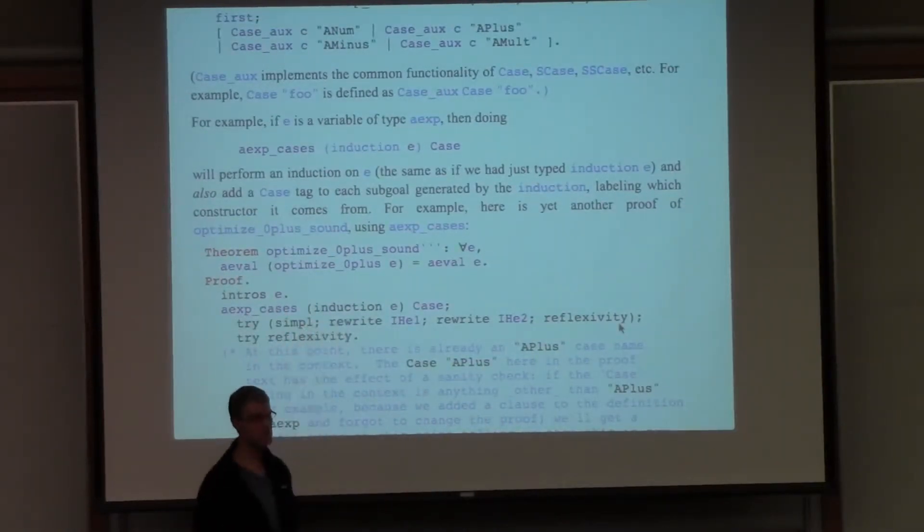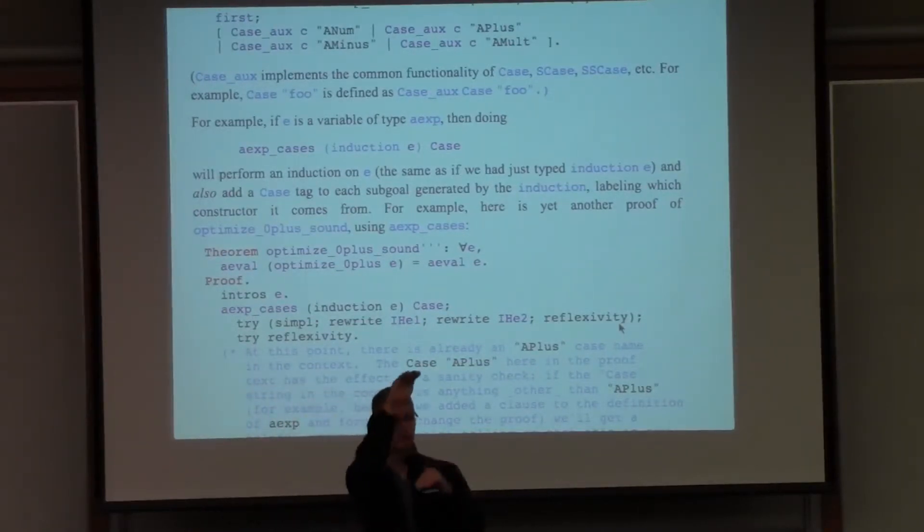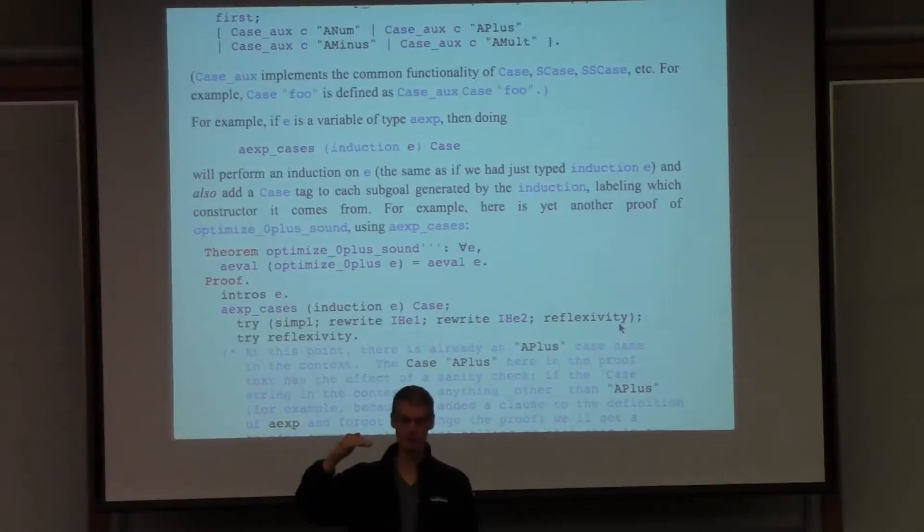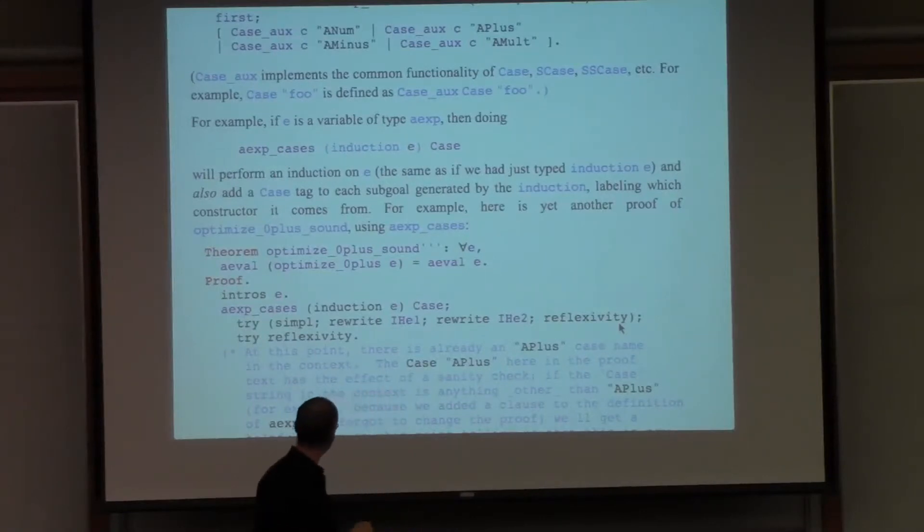And what that will do is it will leave me with four sub-goals, one for each of the cases of AXP, but each of those sub-goals will be labeled in the way that the case tactic labels things. Why is that good?